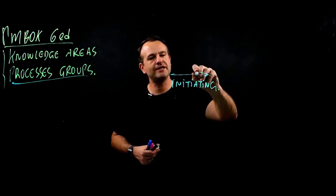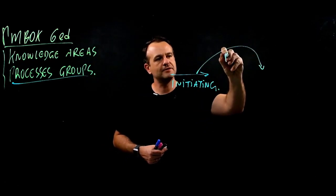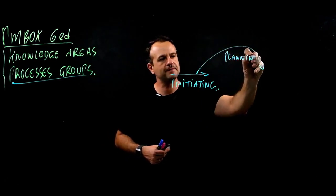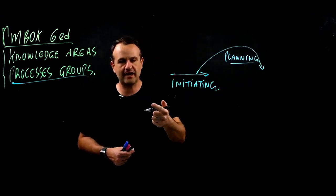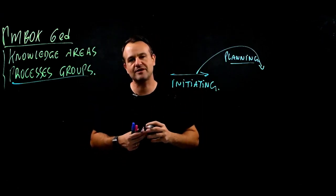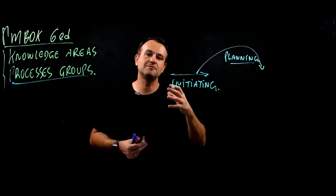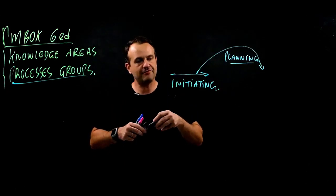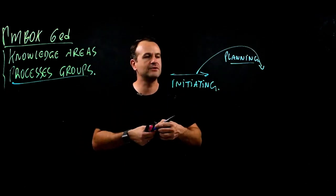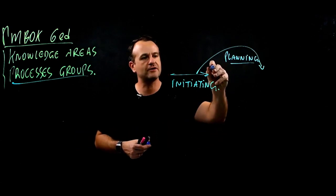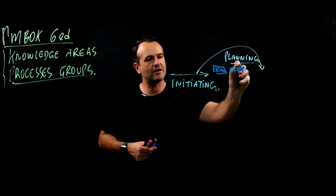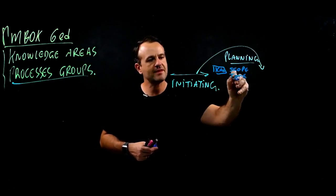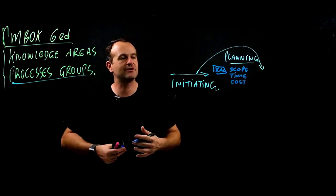Once we do the initiating, then we have Planning. The planning process group is where we combine the knowledge areas so that we can plan scope, plan schedule or time, plan resources, plan costs, plan quality, and all of that. To develop a project management plan we have to focus on all the knowledge areas — scope, time, cost, quality — all of those that I'm going to describe in another video step by step going through each of the processes.